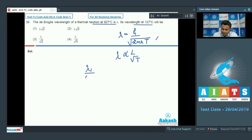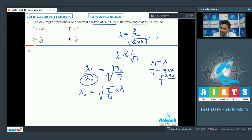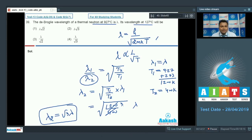So lambda 1 upon lambda 2, from here we can write square root of T2 upon T1. Now we have to find lambda 2, therefore lambda 2 will be square root of T1 upon T2 into lambda 1. Given that lambda 1 is lambda, T1 is 927 degree centigrade, so 927 plus 273, that is 1200 kelvin. Similarly T2 will be 400 kelvin. Putting the values, we will get square root T1 1200, T2 400, lambda. Solving it, we get the value of lambda 2 equals root 3 times lambda.